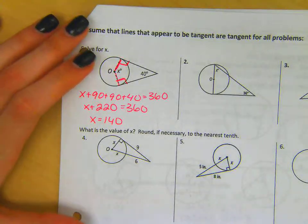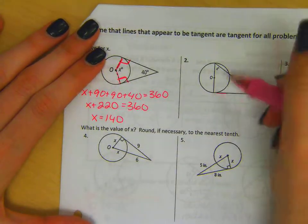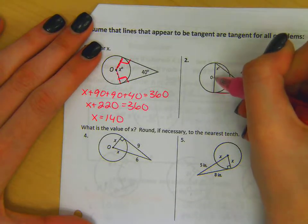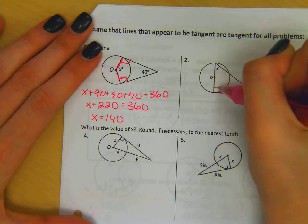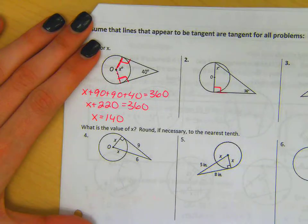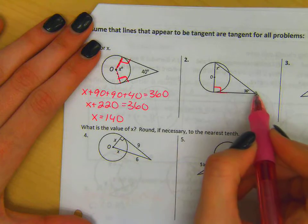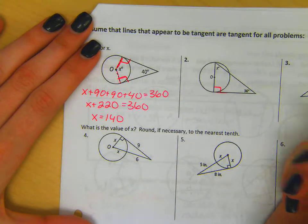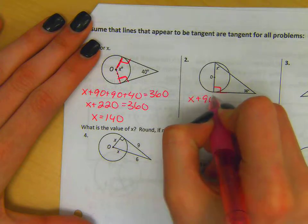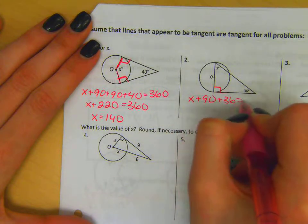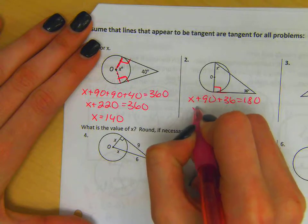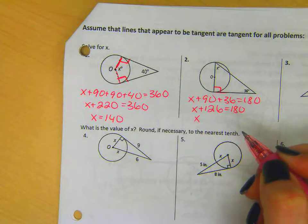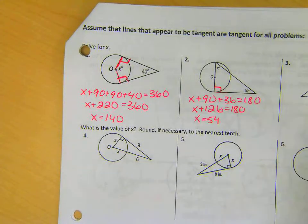Same process for number two. We have a tangent line. We have angle measures. So again, we're going to use the fact that the diameter, or we think of just the radius, is perpendicular to that tangent line. Well now I have a three-sided figure. I have a triangle. I know the sum of the interior angles of a triangle is 180. So x plus 90 plus 36 is 180. x plus 126 is 180. Subtract 126 from both sides, we get that x equals 54.